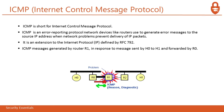Next is ICMP — Internet Control Message Protocol. ICMP is used by error reporting protocol network devices like routers to generate error messages to the source IP address when network problems prevent delivery of IP packets. It is an extension to the internet protocol defined by RFC 792. An ICMP message is generated by router R1 in response to a message sent by H0 to H1 and forwarded by R0.